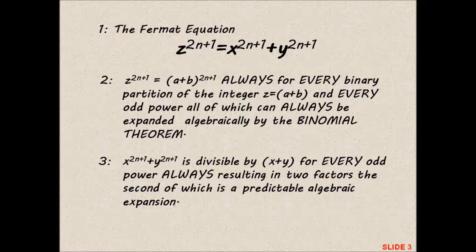3. x to the power 2n plus 1 plus y to the power 2n plus 1 is divisible by x plus y, for every odd power always resulting in two factors, the second of which is a predictable algebraic expansion.